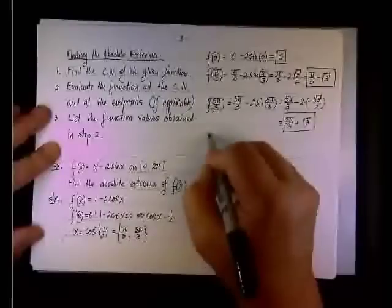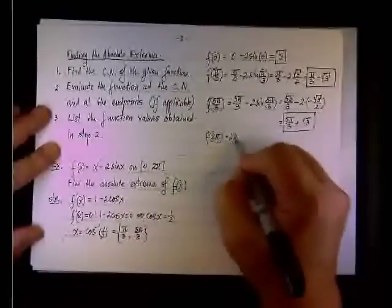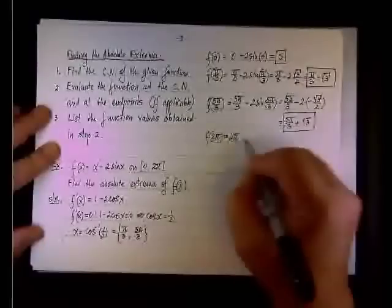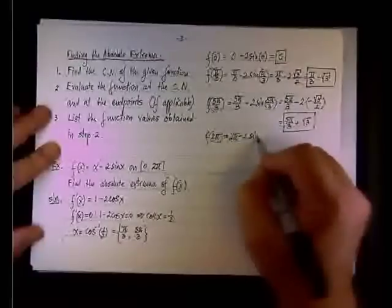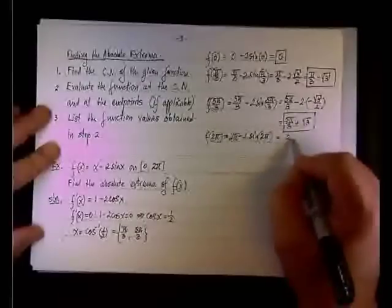And lastly, f of two pi. It will be two pi minus two sine of two pi, but sine of two pi is zero, so it will be simply two pi.